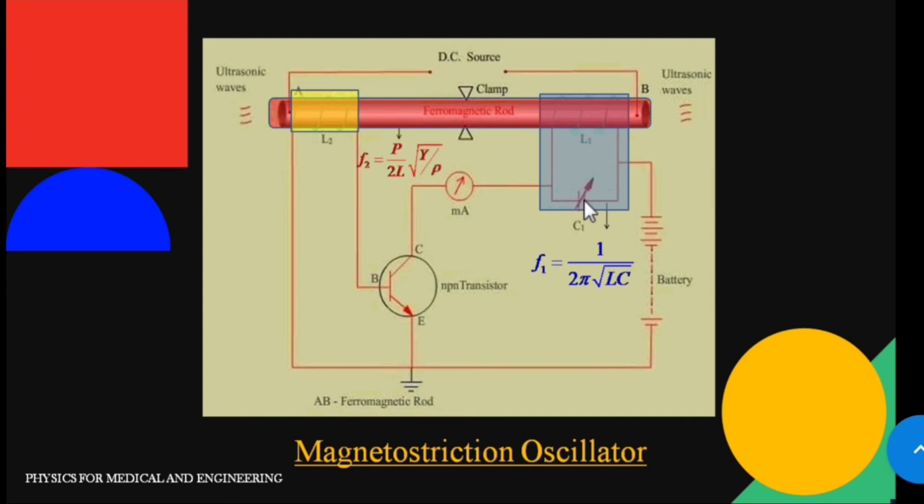The natural frequency of the rod is given by f2 equals p over 2L times the square root of Y over ρ, where p is the harmonic mode, L is the length of the ferromagnetic rod, Y is the Young's modulus, and ρ is the density of the material.